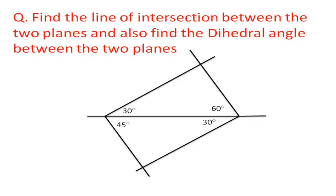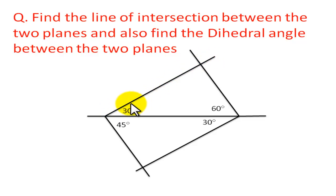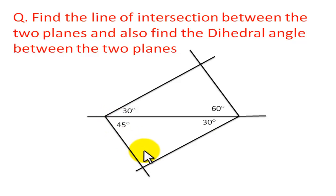As you can see we have two planes. One plane goes up to 30 degrees to the vertical and 45 degrees to the horizontal.